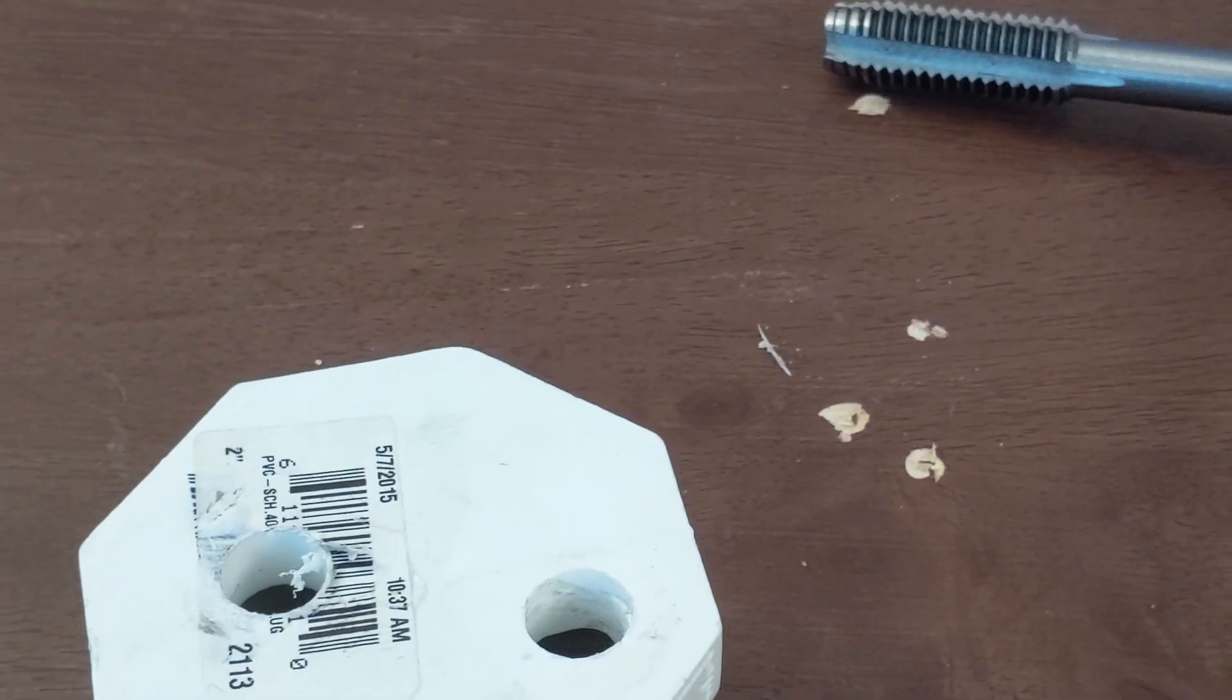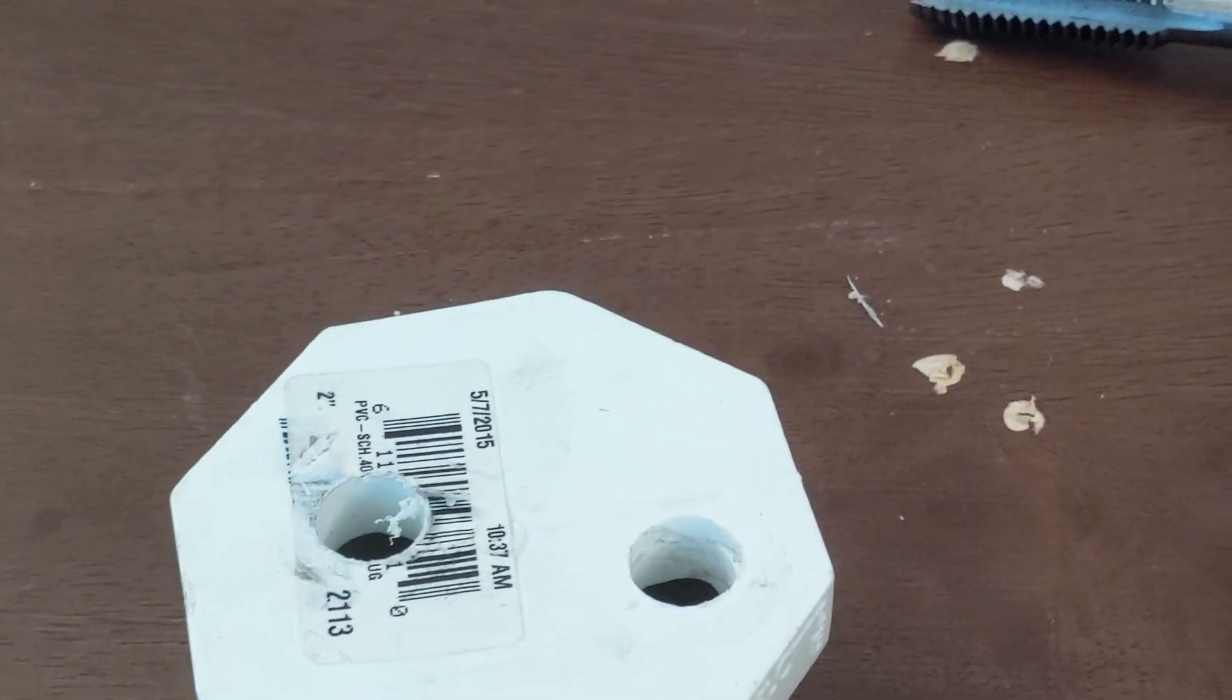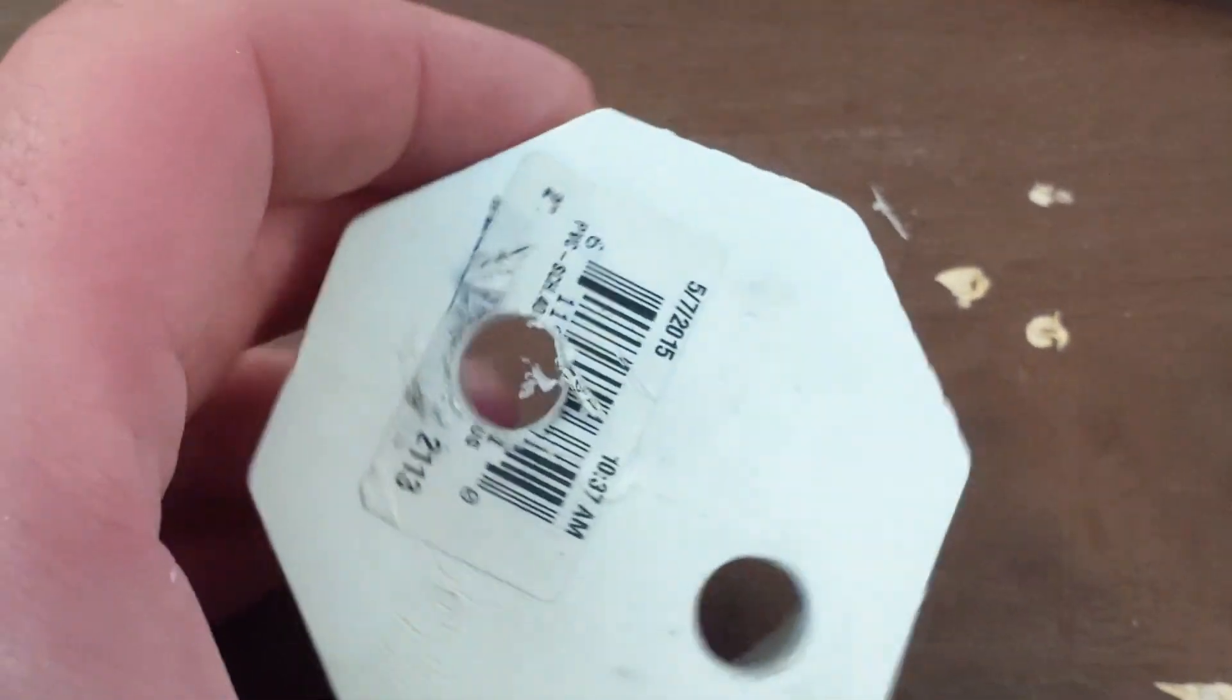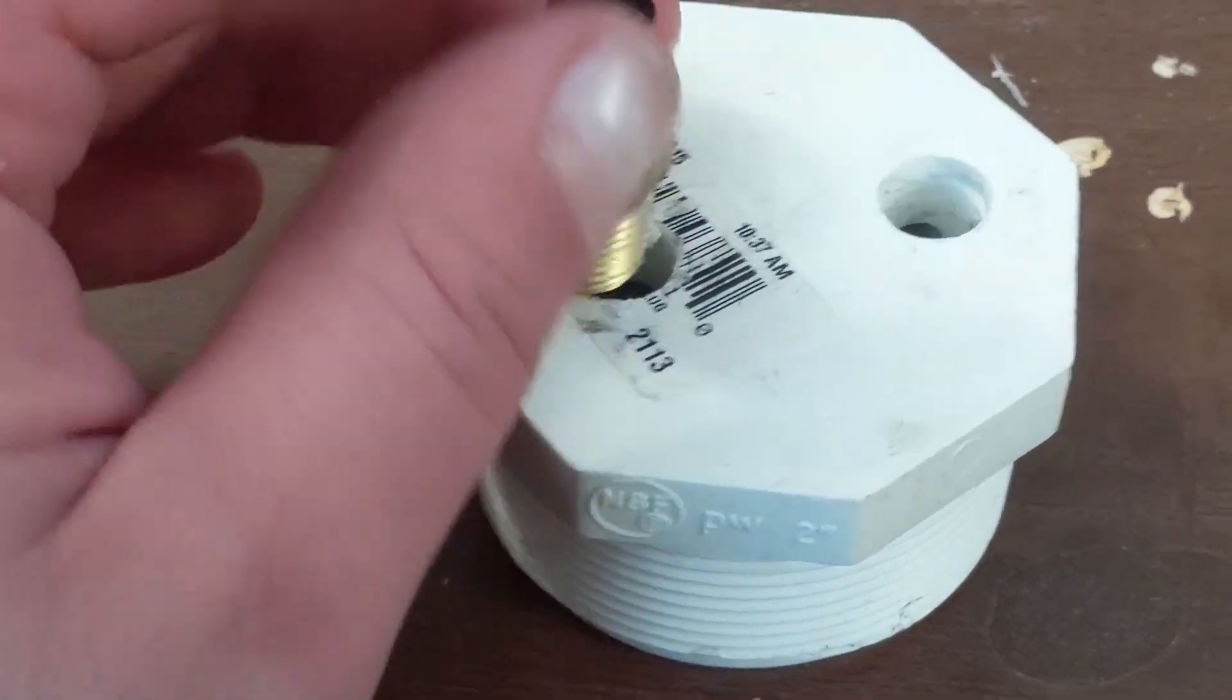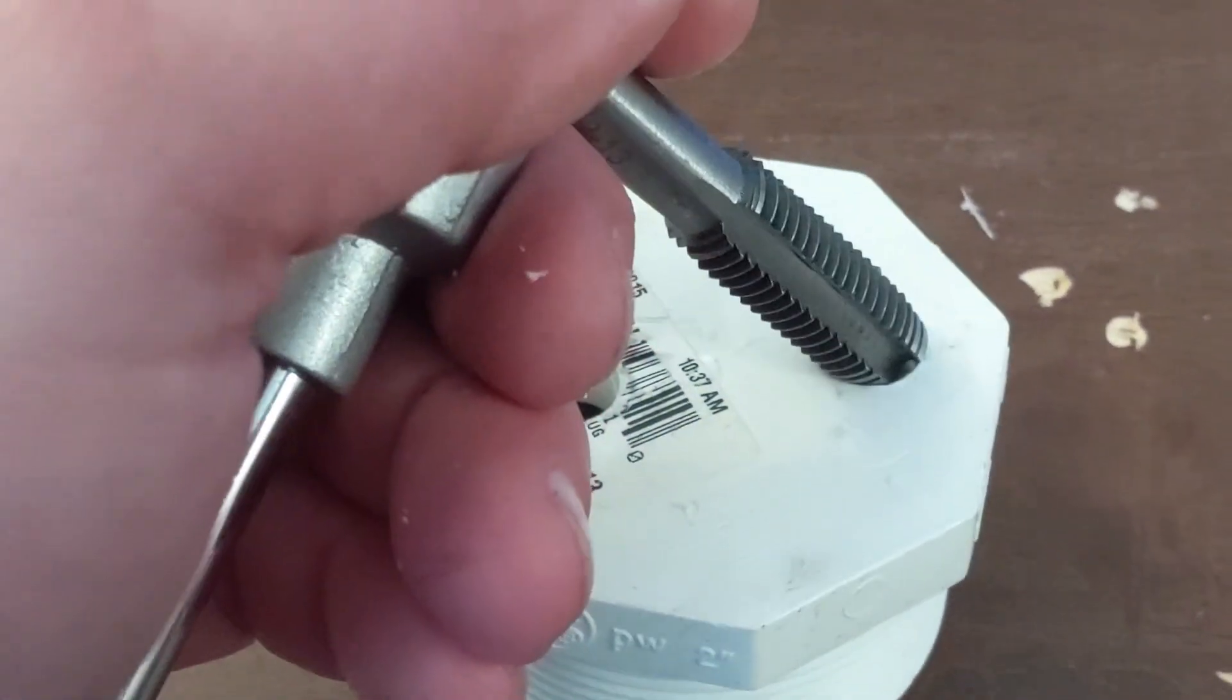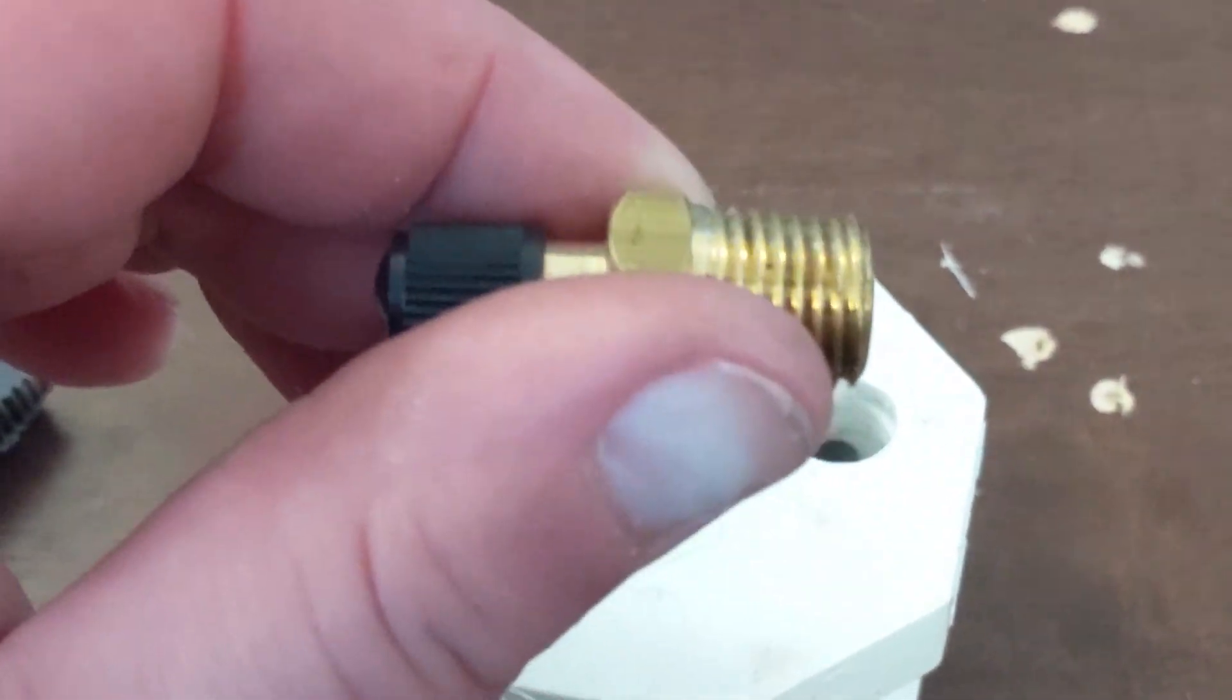Admittedly a workbench and a clamp would be very nice to have right now, but all I've got is a little TV dinner table. So this is what you end up with. You get your couple of holes, make sure that they're as close as you can get them to the size of your threads, your NPT fittings here. Now what we're going to do is take our tap, we're going to tap this hole, tap the one next to it, and then we are going to screw in each one of these fittings.